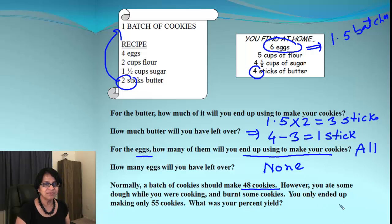So what happened was, we ended up only having 55 cookies. We lost some cookies. So what will be our percent yield?